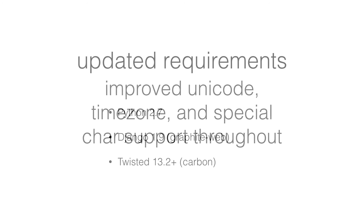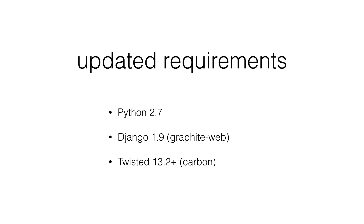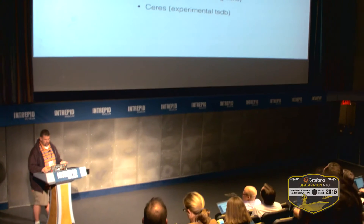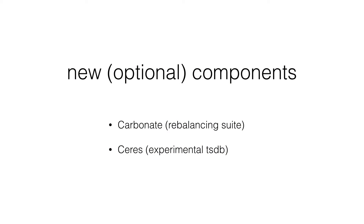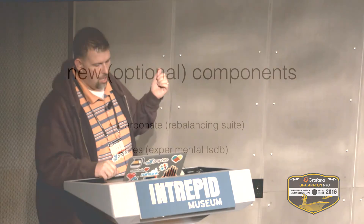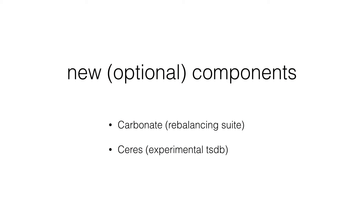Quick mention of the updated requirements: Python 2.7, Django 1.9, Twisted higher than that. Some new optional components — Carbonet, written by a friend of mine at GitHub, Scott Sanders. It's basically a suite of small sharp utilities you can use to rebalance or repair Whisper nodes. And there's also Series, which is an experimental replacement to Whisper — there's a new document out there for it.